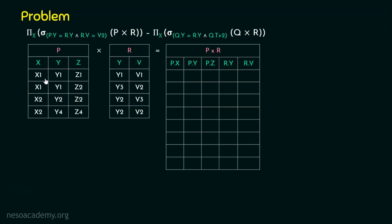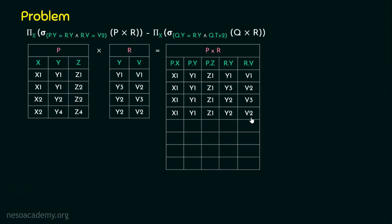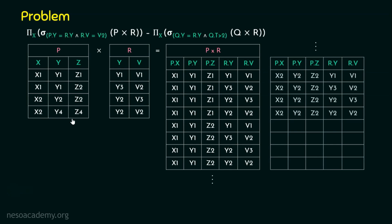How Cartesian product works: take the first row X1, Y1, Z1 and join it with all 4 tuples of the other relation. So the first row of P is combined with (Y1,V1), then (Y3,V2), then (Y2,V3), then (Y2,V2). Then the second row of P is joined with all 4 rows of R, giving 4 more tuples. The remaining 2 rows each produce 4 more tuples, giving a total of 16 tuples.